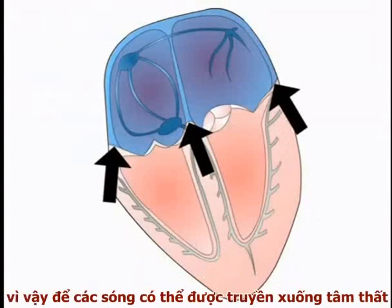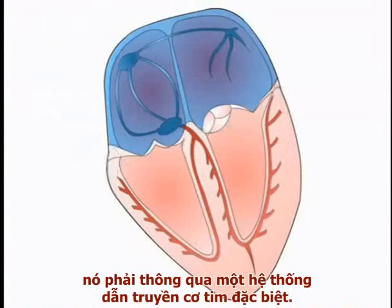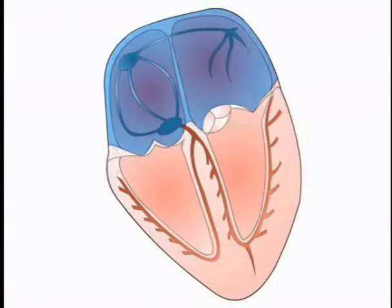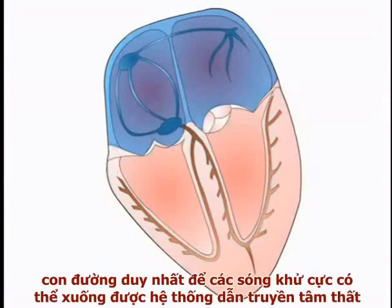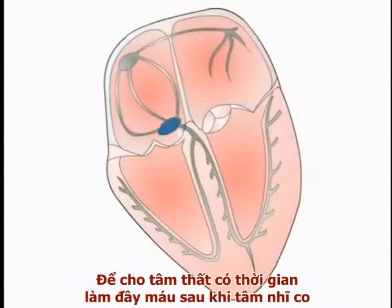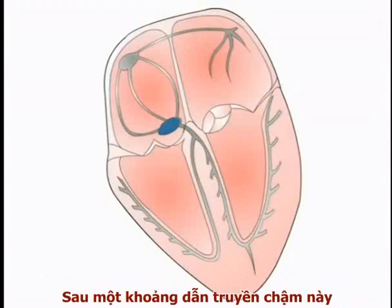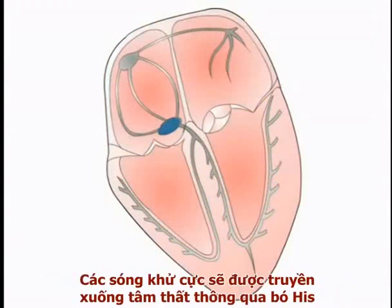The atria and ventricles are separated by a non-conducting fibrous septum, and the depolarization wave cannot penetrate this barrier. In order to activate ventricular contraction, the wave must be transmitted into the ventricles by the specialized cardiac conducting system. In a normal heart, the only route by which the depolarizing wave can enter the ventricular conducting system is through the AV node, which initially delays the spread of the depolarization wave in order to allow the ventricles to fill with blood following atrial contraction.